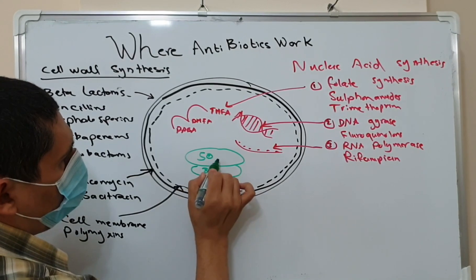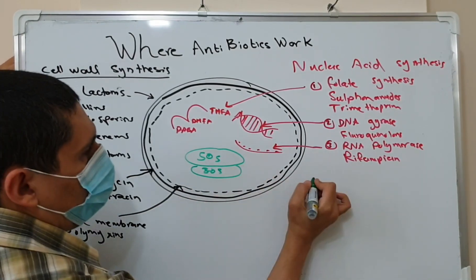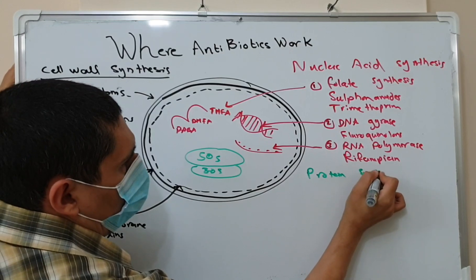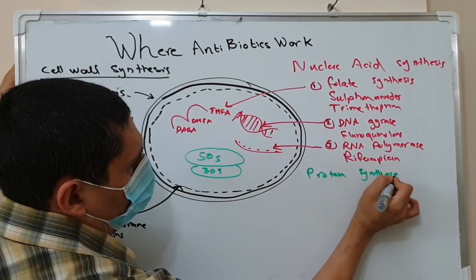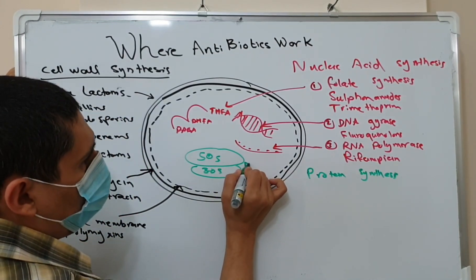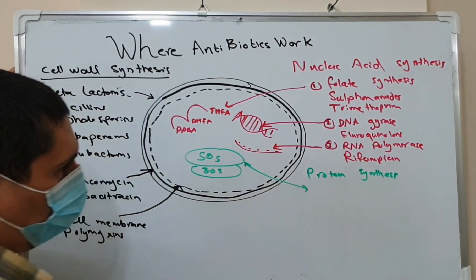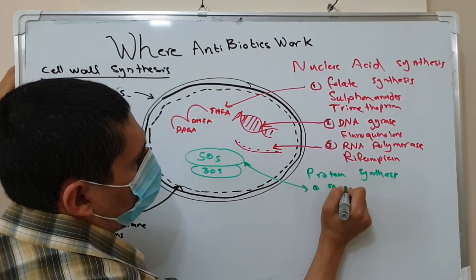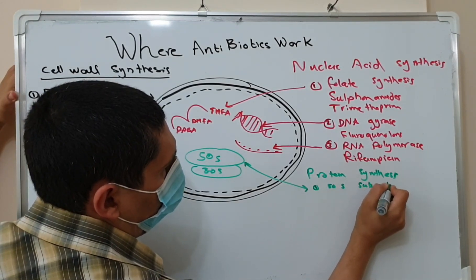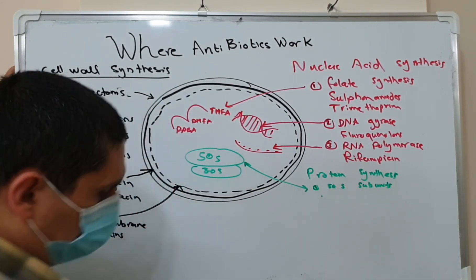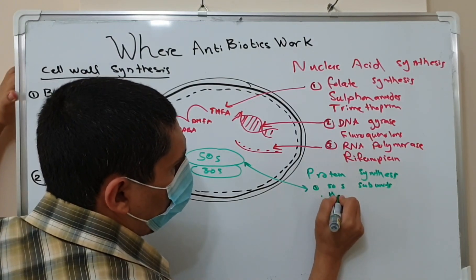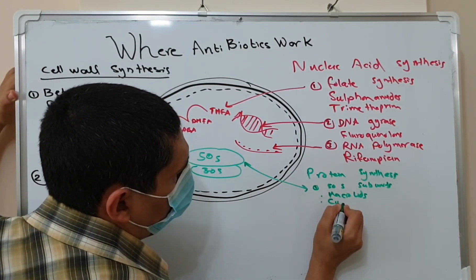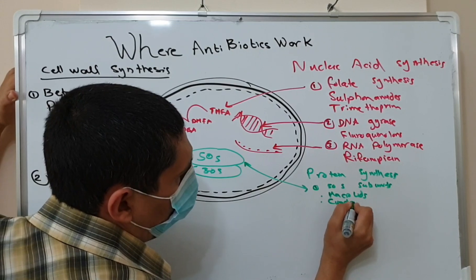The third major group of antibiotics works on protein synthesis. Half of these antibiotics work on the 50S subunit and others work on the 30S subunit. For those working on the 50S subunit, we have macrolides such as azithromycin and clarithromycin, and also clindamycin.